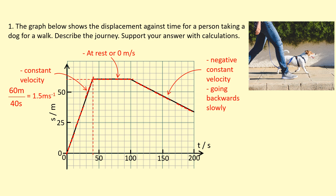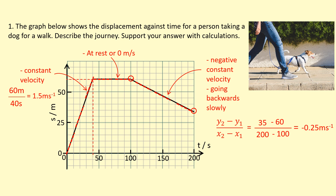For example, they might be walking backwards, while before they were walking a bit faster. Let's use change in y over change in x to find the speed at which they were going backwards. I'll pick two points from the third section using y2 minus y1 over x2 minus x1. y2 is 35 meters at x2 equals 200 seconds, minus 60 meters at 100 seconds. This gives a velocity of minus 0.25 meters per second, which makes sense because they're going backwards so it should be a negative velocity.